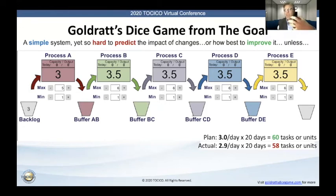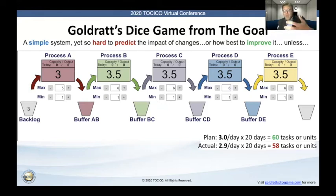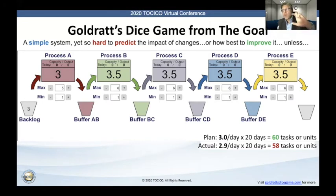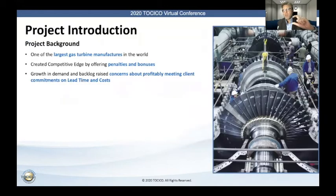That's just an analogy of how the dice game was incredibly powerful to show how controlling the release — choking the release, making sure we're not running at maximum capacity but putting the slowest resource at the front to dictate the pace of the whole system — is a very simple but very powerful way of not just increasing output and shortening the time to achieve it, but closing the dramatic gap between the commitments we've made and our actual performance.